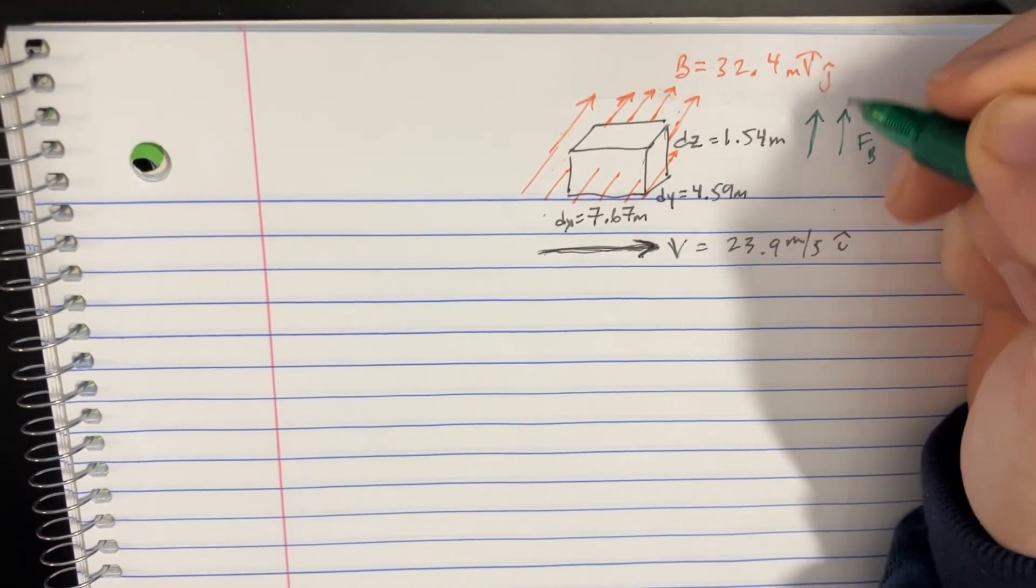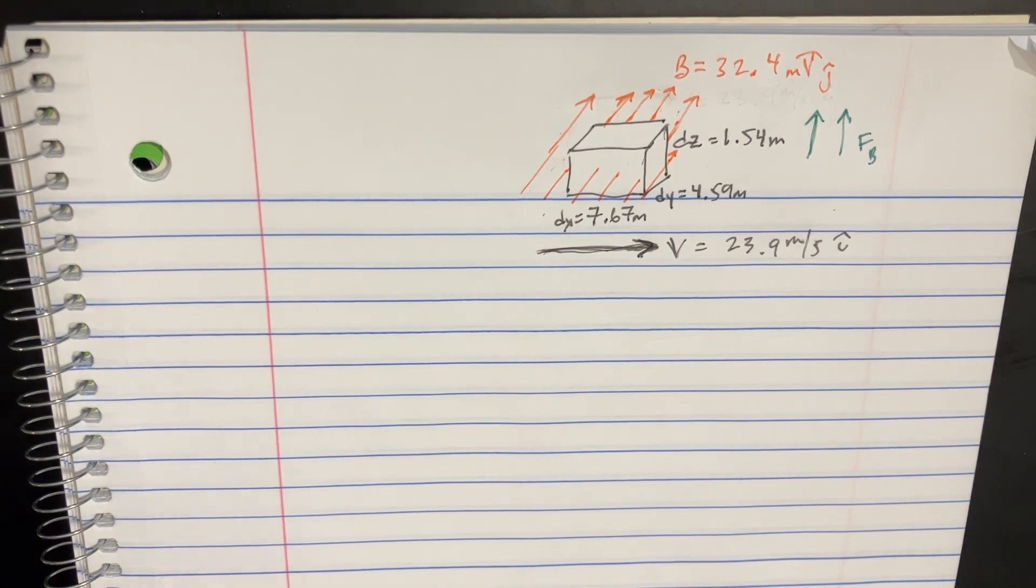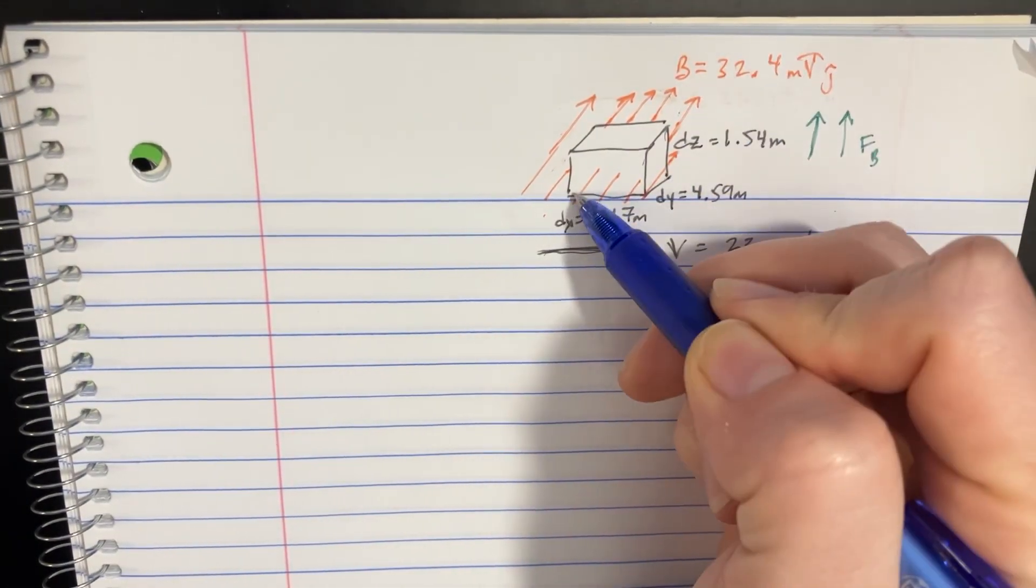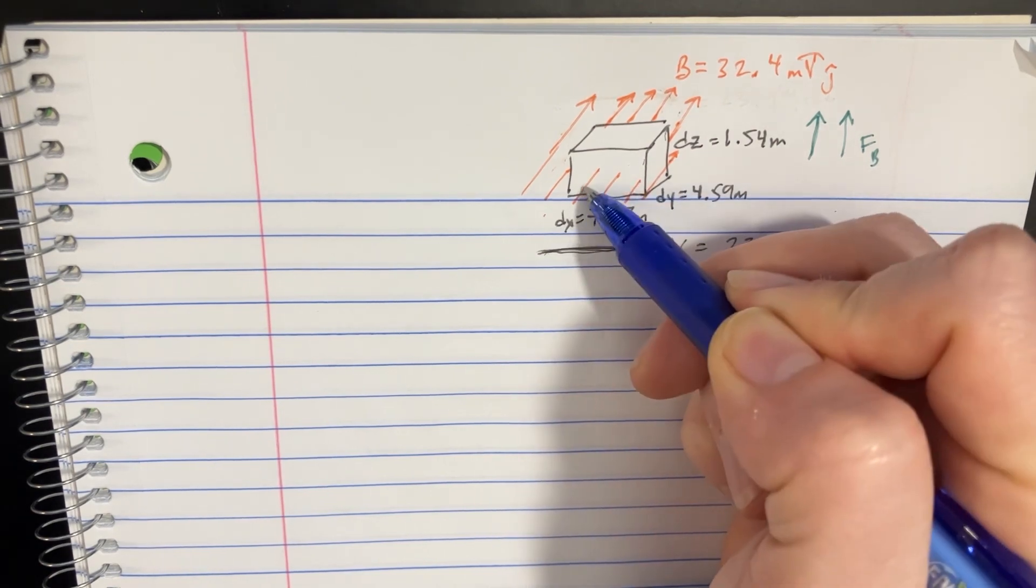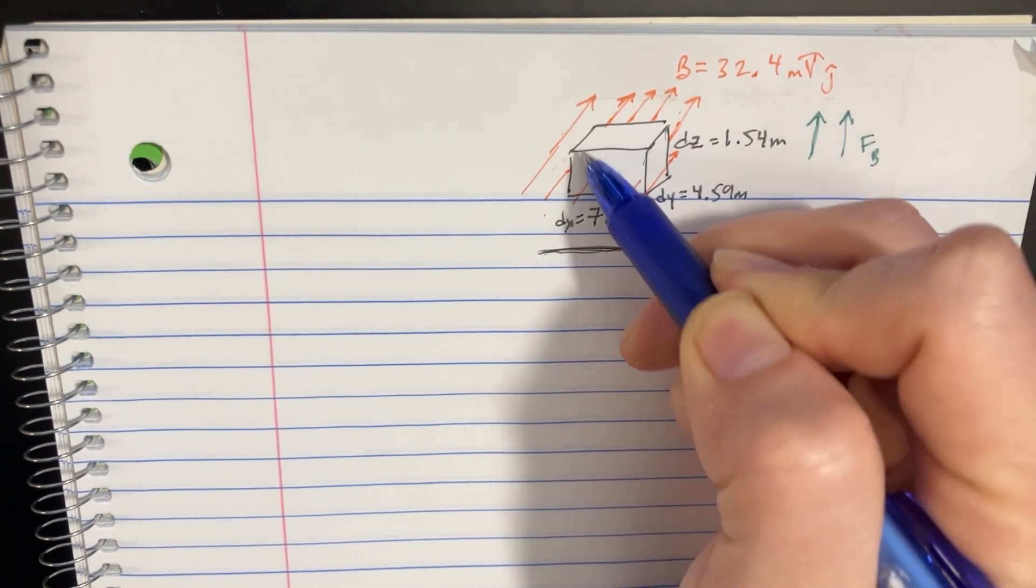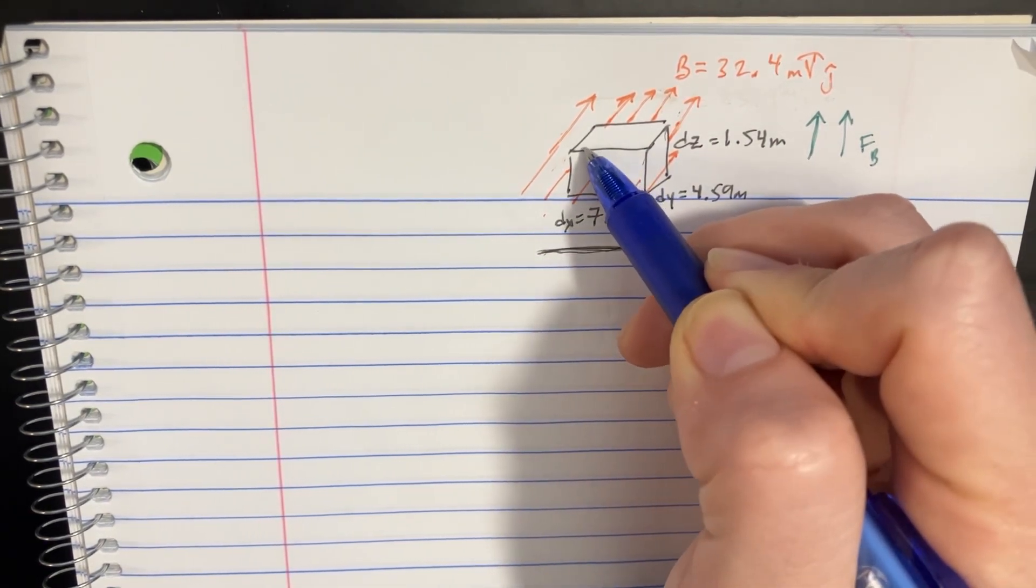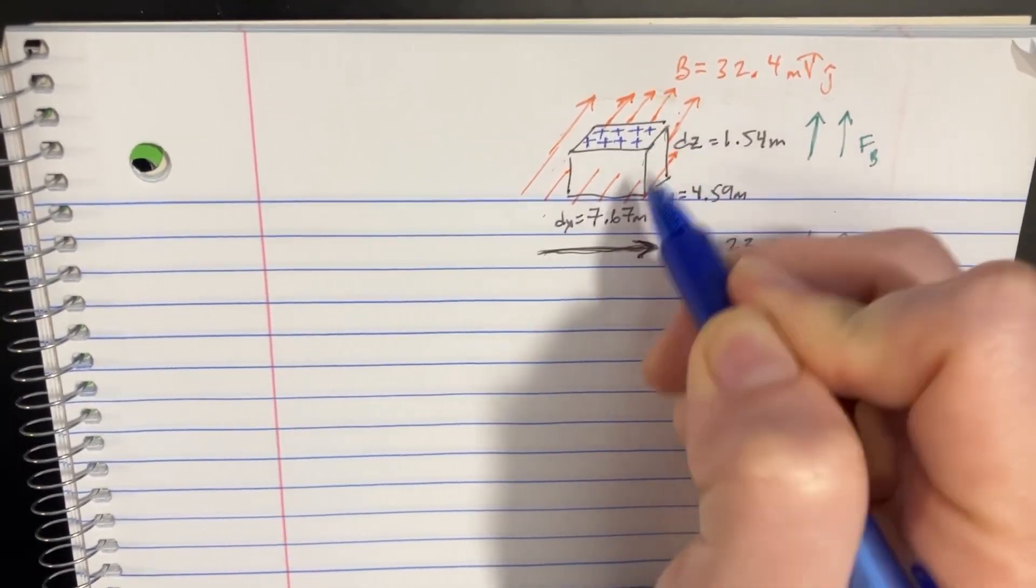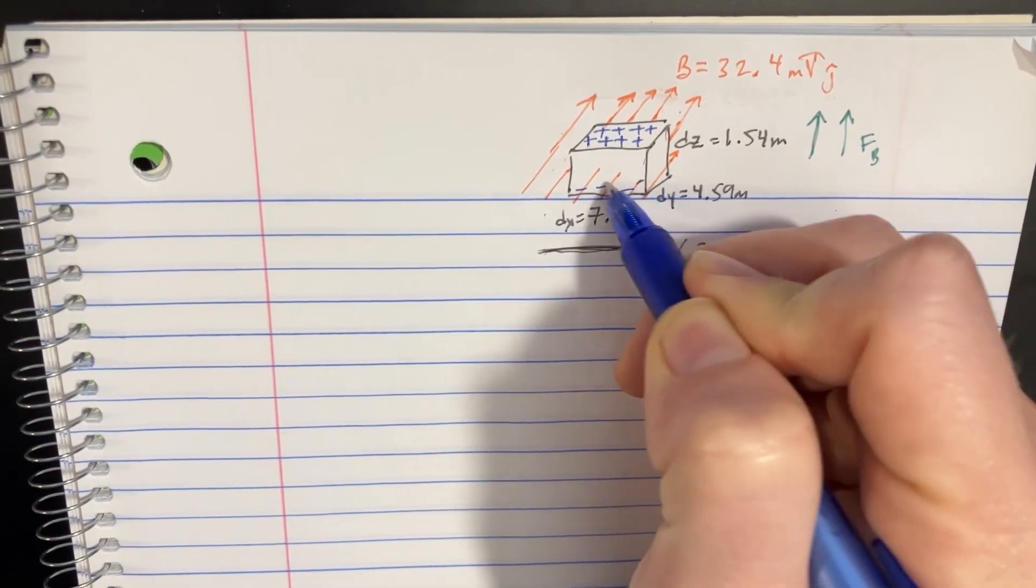That's going to be the force from the magnetic field. And if we do that, then what's going to happen is inside this box, the charges, because it's a conductor, all of a sudden the charges are going to move around, and you're going to get the positive going up here at the top, and then the negatives are going to show up towards the bottom over here.